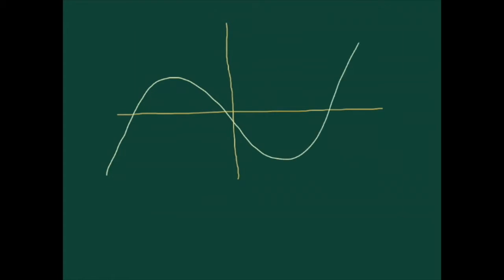Here's a random function. It looks like a cubic polynomial, kind of a rough sketch, but it could be any function. We're assumed to be given a point x equals a. What that does is it allows me to find the coordinates of a point on the curve at x equals a. I get the x coordinate x equals a — that could be 5, 1, whatever — and the y coordinate I get by plugging x equals a into the function.